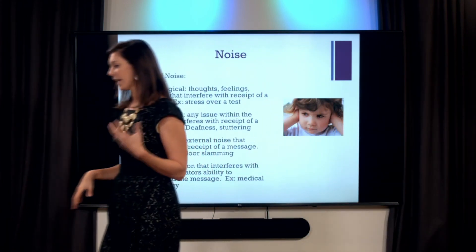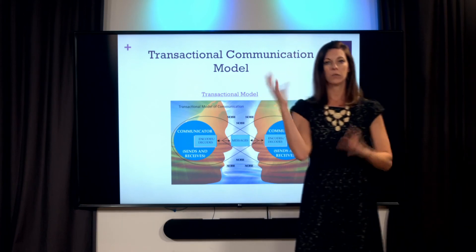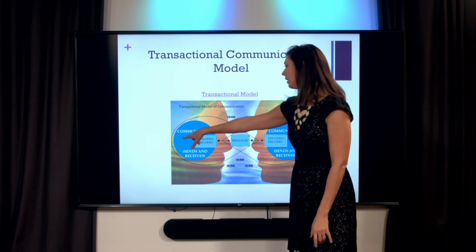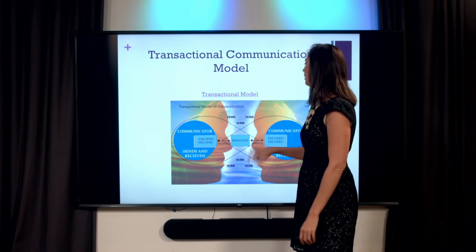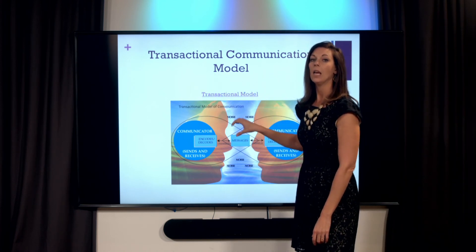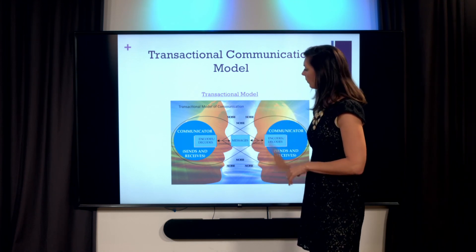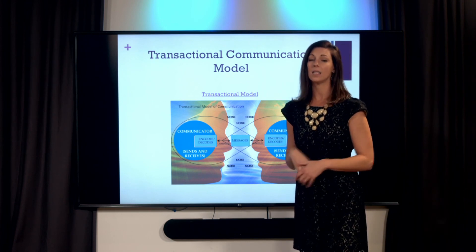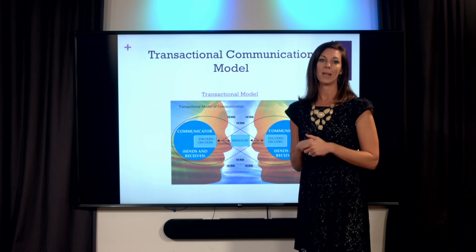These are all the things that can impact the receipt of a message, and they're represented in the model we now see as the ideal model — the transactional communication model. Both the sender and receiver send and receive messages, so it's two-way. Messages are sent through channels, and noise is coming in and impacting the receipt of those messages all over the place. This is just a way of showing that communication is very complex and it's easy to have miscommunication.